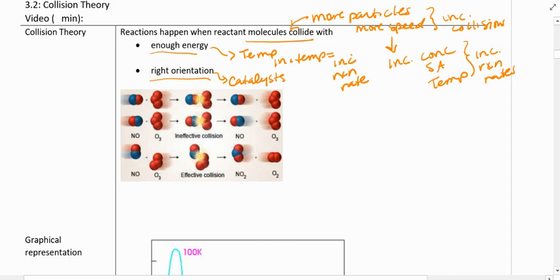If we look at this picture below, we can see an example of what we mean by right orientation. Here we've got nitrogen monoxide colliding with ozone to produce some products. Notice if the nitrogen monoxide and oxygen collide like this or like this, nothing happens. We get no products.